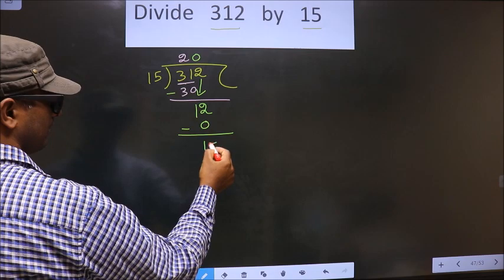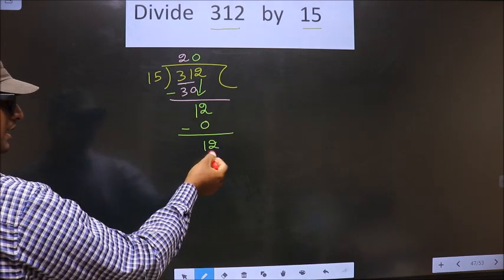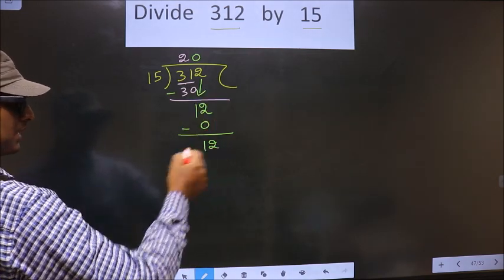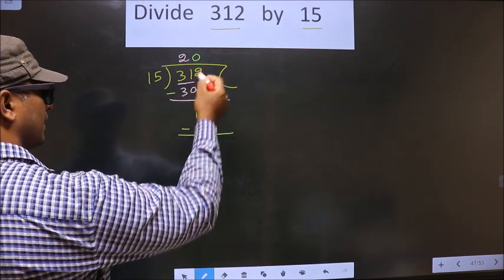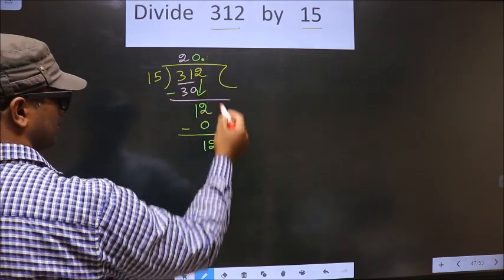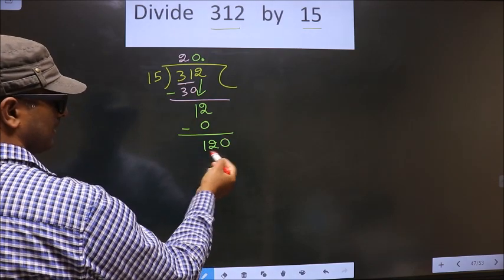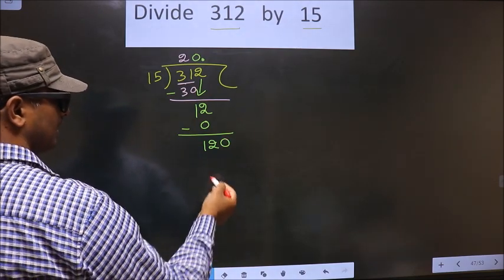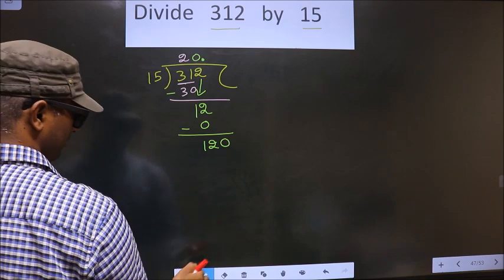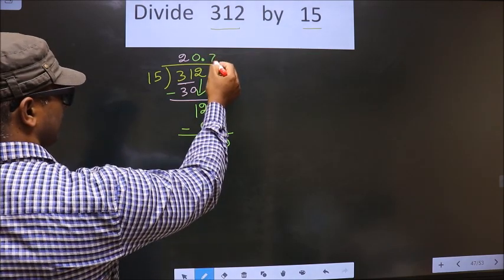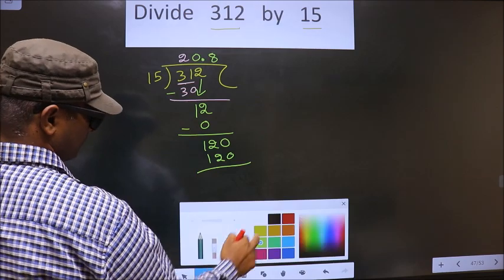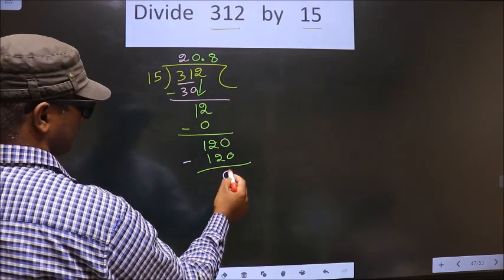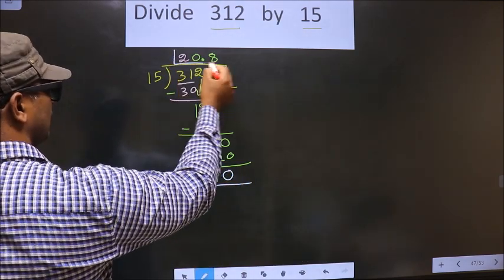Now you subtract. Now you get 12. Now here we have 120. When do we get 120 in 15 table? 15, 8, 120. Now you subtract. You get 0. This is our quotient.